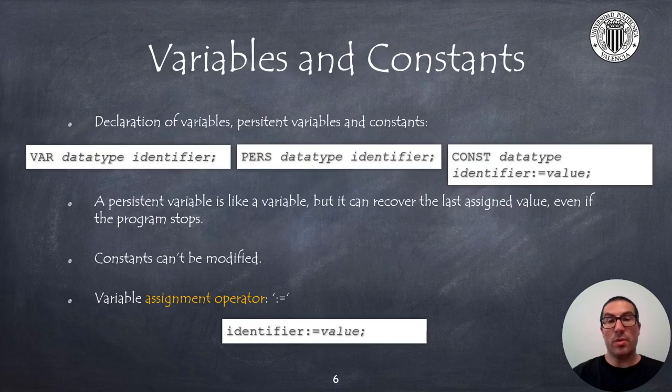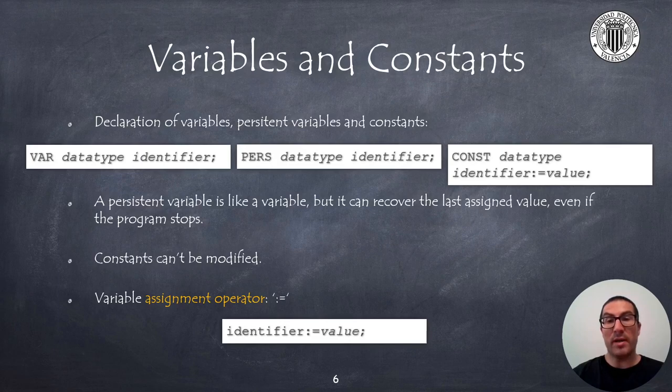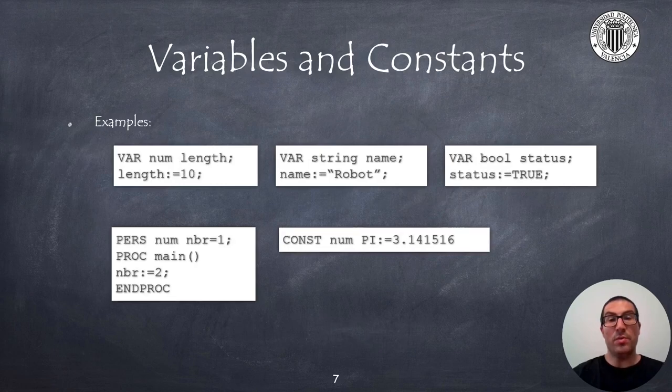Rapid allows you to store data in variables using the var keyword, but information can also be persistently stored using the pers keyword. The difference is that pers variables keep their value even when the program stops. Constants are declared with the const keyword and need to be assigned at the time of their declaration and cannot be modified later. To assign a new value to a variable, we can use the assignment operator with the colon and equal sign. Here I show some simple examples declaring variables and assigning values to them or declaring a constant.